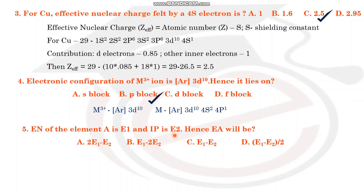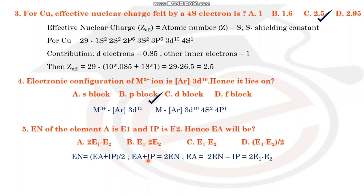Fifth question involves electron affinity and electronegativity. The relation is: electronegativity (En) equals electron affinity (Ea) plus ionization potential (IP) divided by 2. So: En = (Ea + IP) / 2. Therefore, electron affinity Ea = 2·En minus IP. If En equals e1 and IP equals e2, the answer is 2e1 minus e2.